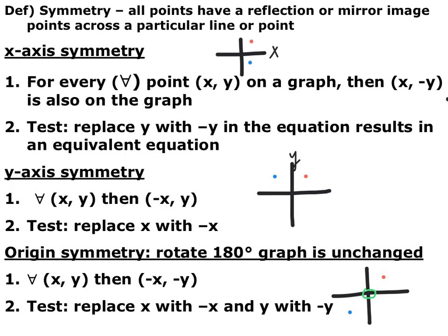The next thing we're going to talk about is symmetry. Symmetry means that all points have a reflection or mirror point across a particular line. In this class we look at three types of symmetry.